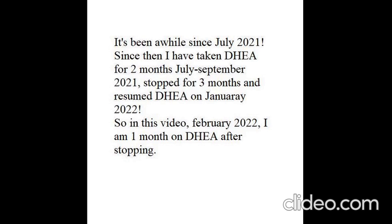T-cell receptors are made up of two polypeptide chains that together compose one antigen binding region. Approximately 95% of T-cell receptors are composed of an alpha and a beta chain, while the remaining 5% of T-cell receptors are made up of gamma and delta chains.